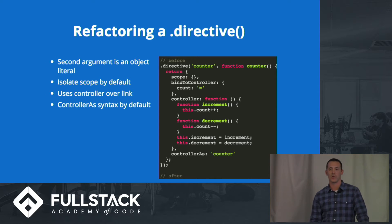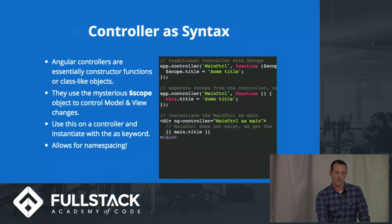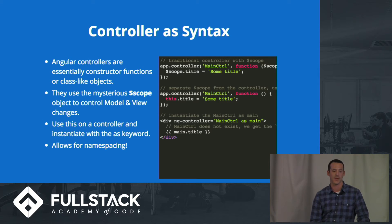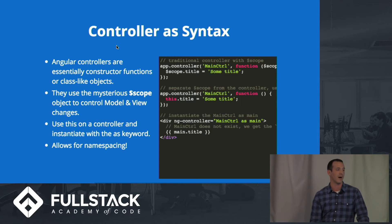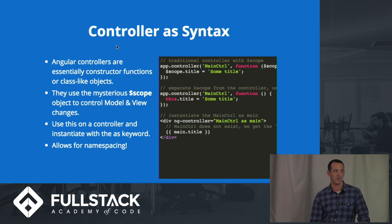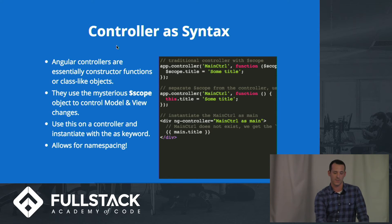By default, components use the controller-as syntax or style. It's a popular practice for using controllers on directives and basically anything. Angular controllers are essentially constructor functions or class-like objects. Rather than using the scope variable that's injected in to control model and view changes, we set up a normal constructor function that uses the this keyword and instantiate it as an instance of the controller. This is great — it allows for namespacing in your views.